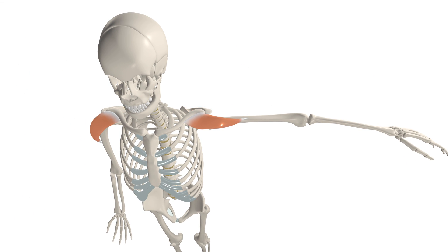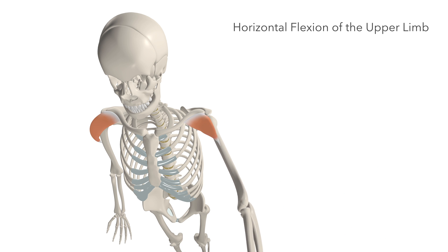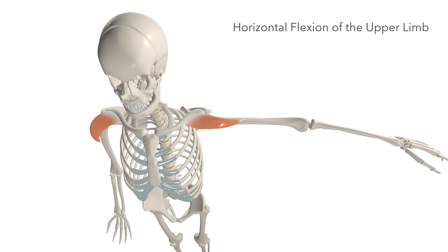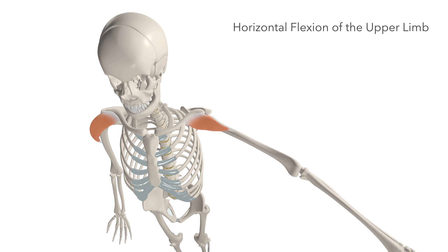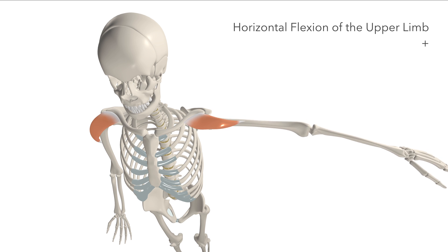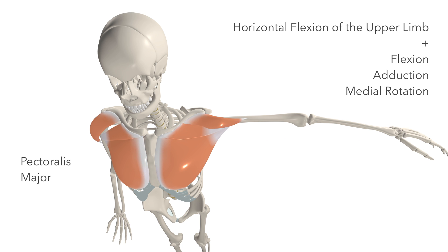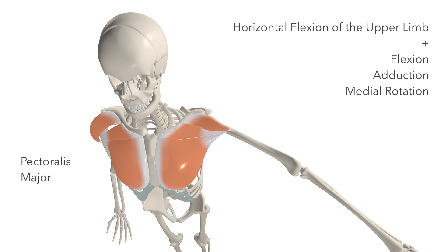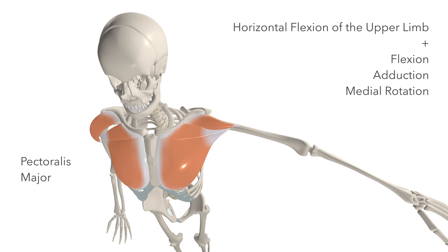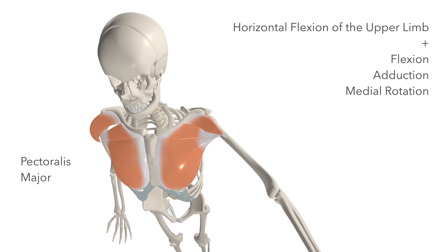The anterior head, acting alone, draws the upper limb forward, contributing to horizontal flexion of the arm — which is what this movement that you're looking at now is called — as well as flexion, abduction, and medial rotation of the upper limb. The pectoralis major assists the anterior head of the deltoid in performing all of these movements.